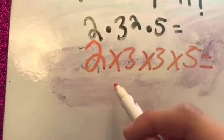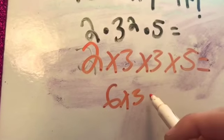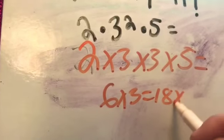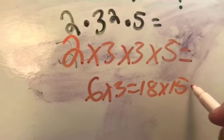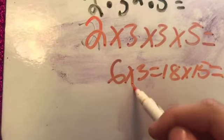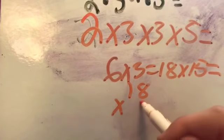2 times 3 is 6 times 3 is 18 times 5. So, 18 times 5.